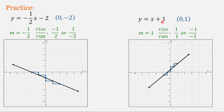For y equals x plus 1, the b value is 1 and the slope is also 1. We rewrite the slope as 1 over 1 — up 1 to the right 1. Or as negative 1 over negative 1 — down 1 and to the left 1. Both fractions simplify to 1, and with a positive slope, the line goes up from left to right.